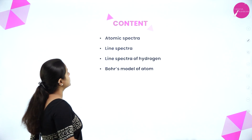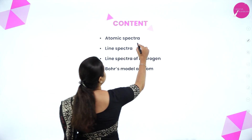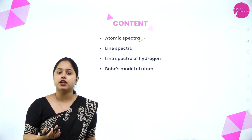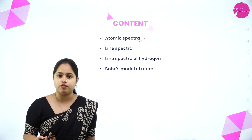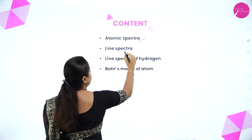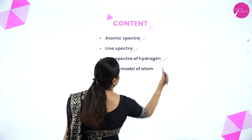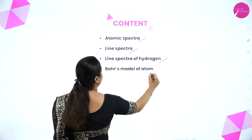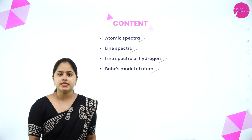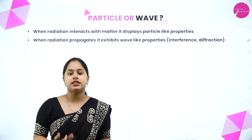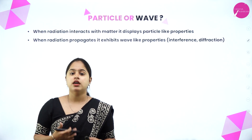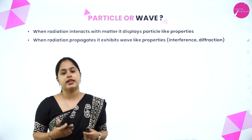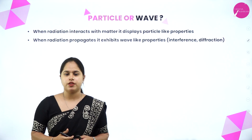So in today's session, we will be discussing atomic spectra, which was the second development which led to the discovery of Bohr model of atom. And then line spectra and line spectrum of hydrogen, which is very important. And finally, the Bohr's model of atom. In last session, we discussed the first development leading to the Bohr model of atom — that was dual nature of electromagnetic radiation.